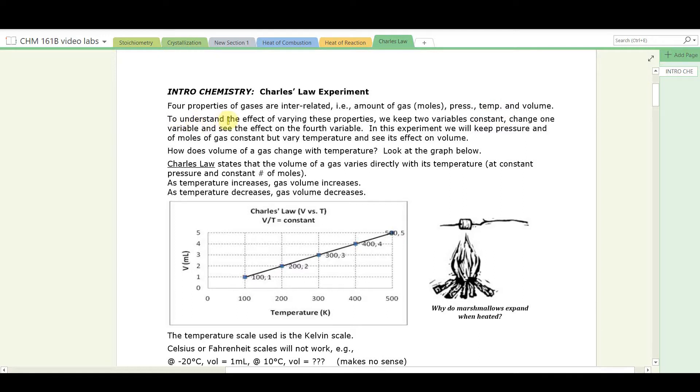To understand the effect of varying these properties, we keep two variables constant. We change one variable and see the effect on the fourth variable. In this experiment we will keep pressure and moles of gas constant but will vary temperature and see its effect on volume.